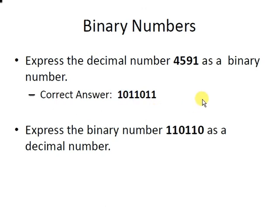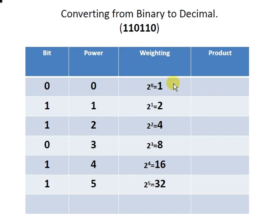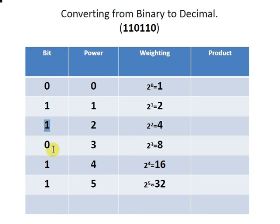The second task is to express the binary number 110110 as a decimal number. Here are our bits. Working from right to left, I'm going to write down each of these binary digits separately: 0, 1, 1, 0, 1, 1 — and again that's moving from right to left.